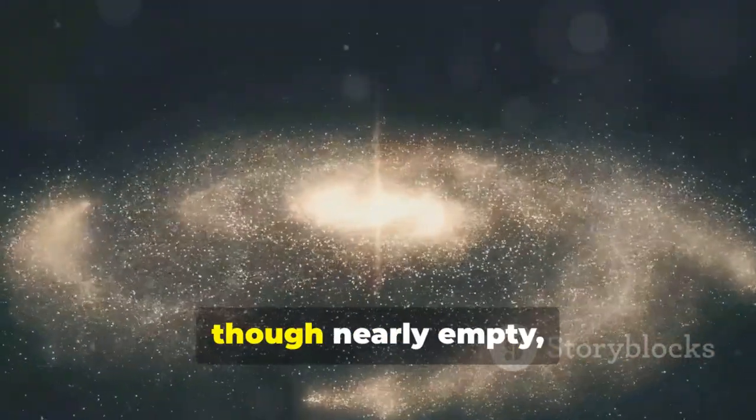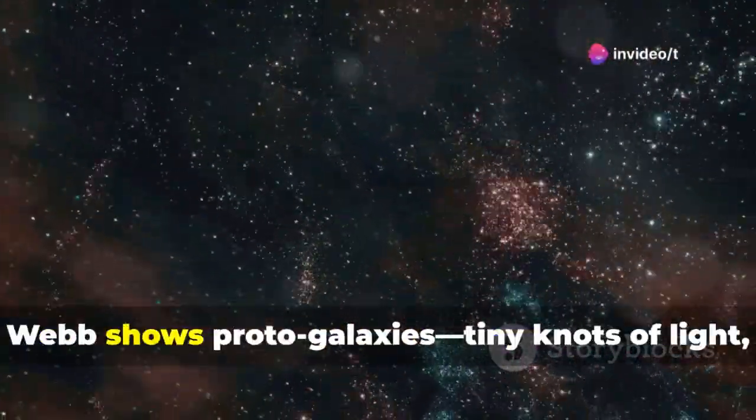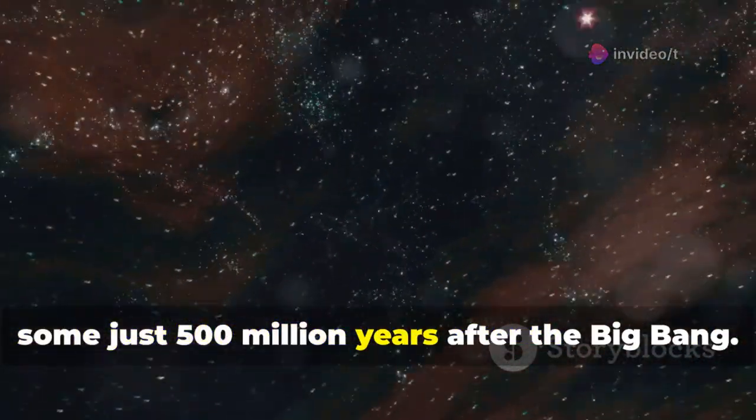The web image is a masterpiece of cosmic cartography, revealing five glowing filaments of hydrogen gas spanning three million light years. These diffuse streams, though nearly empty, have gravity strong enough to shape galaxies. Within the filaments, Webb shows proto-galaxies, tiny knots of light, some just 500 million years after the Big Bang.